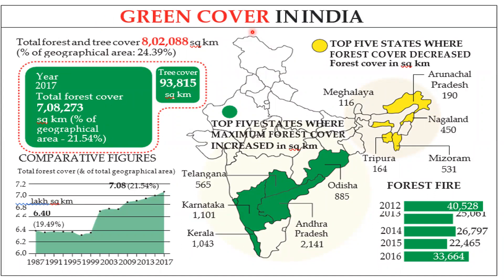Regarding green cover or forest cover in India — the total forest and tree cover is 8,02,088 square kilometers, that is 24.39% of the total geographical area. The top five states where maximum forest cover increased are Odisha, Andhra Pradesh, Telangana, Karnataka, and Kerala. The top five states where forest cover decreased are Arunachal Pradesh, Nagaland, Meghalaya, Tripura, and Mizoram.